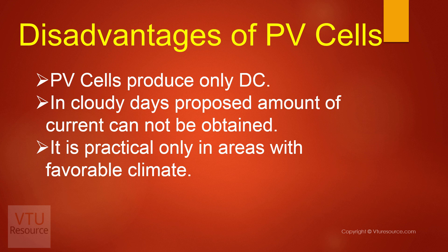PV cells are practical only in areas with favorable climate. For example, in Kashmir, PV cells cannot be used effectively because the sun appears rarely there. Whereas in Rajasthan or in Chennai, they can be used 365 days a year.